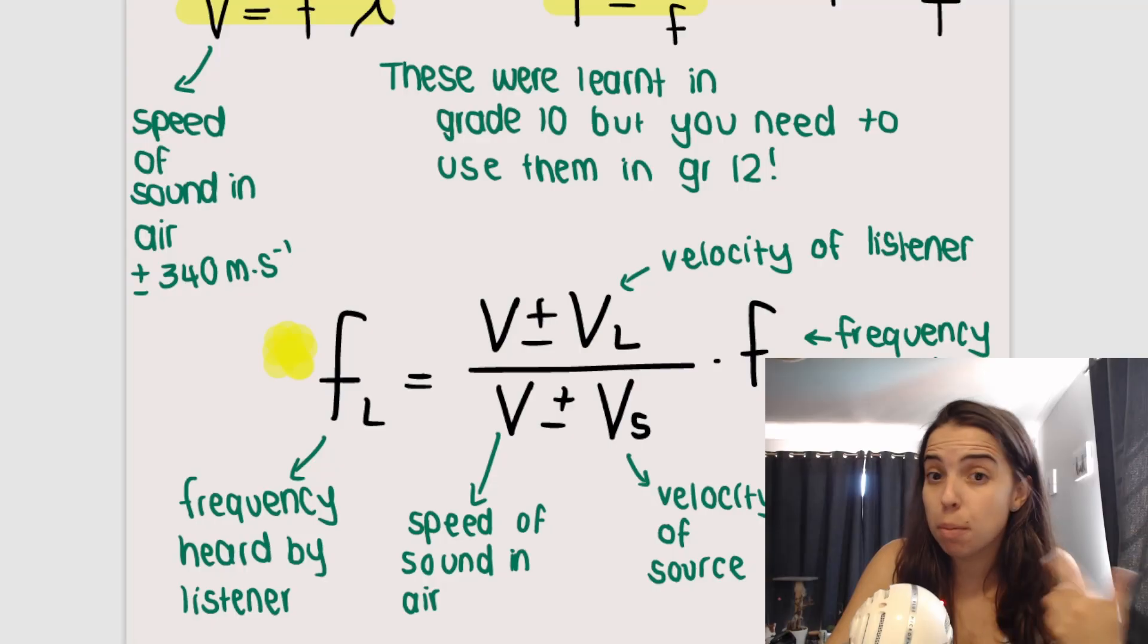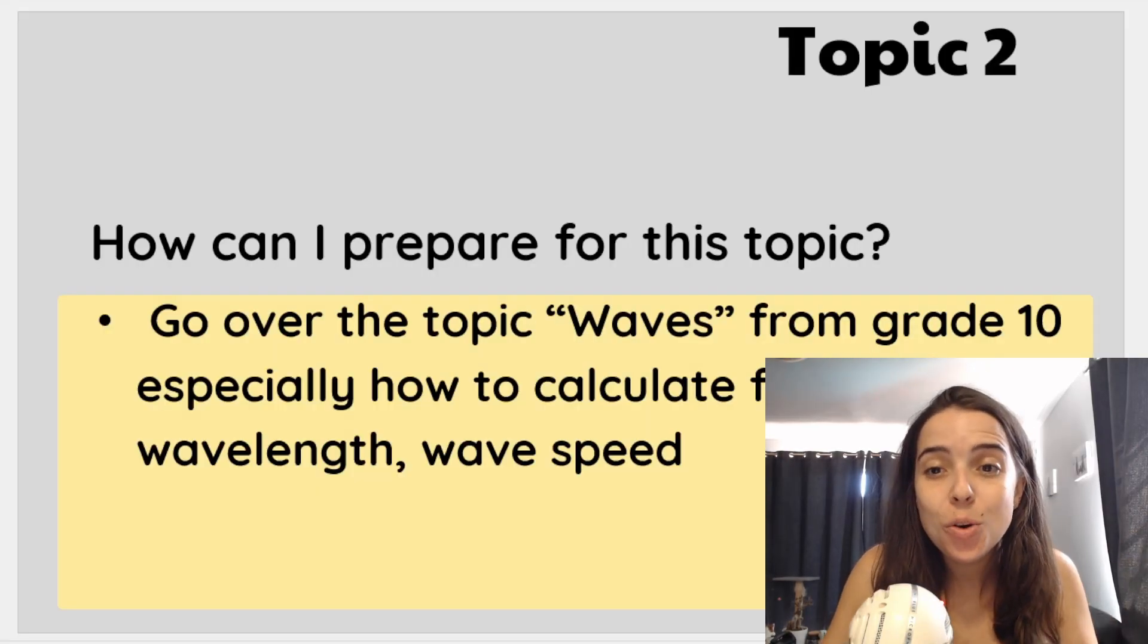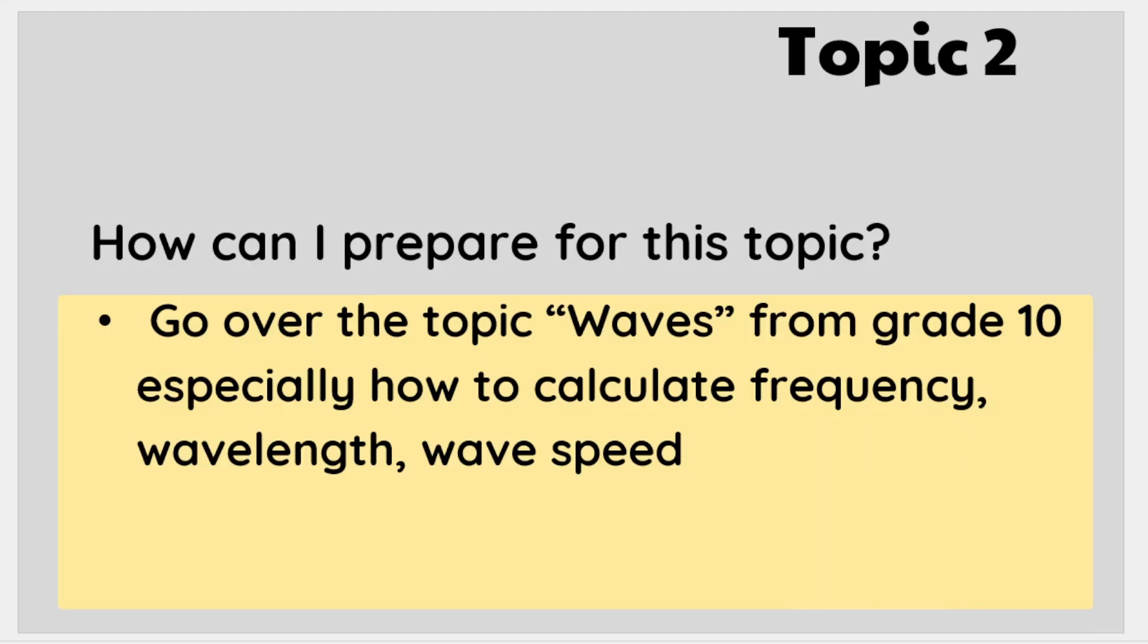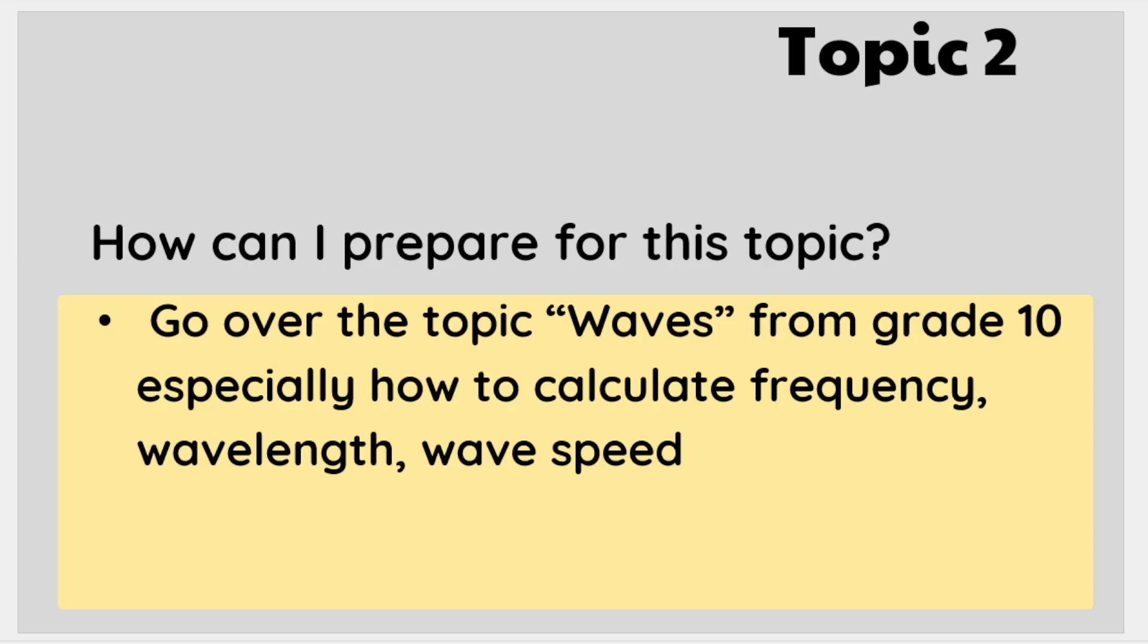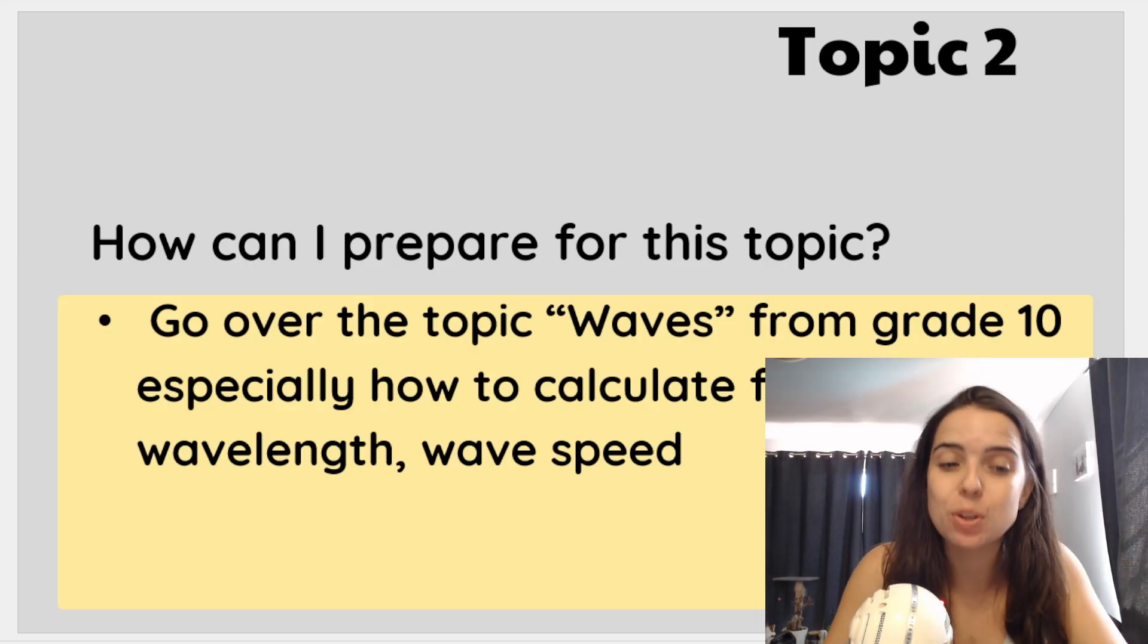In order to prepare for this section, what can you do? You can go over the topic waves from grade 10, especially how to calculate frequency, wavelength, and wave speed. Because if you go back to the formula sheet that they give you for Doppler effect, you will see that you need to be able to calculate all of these things in order to use the new Doppler effect formula.